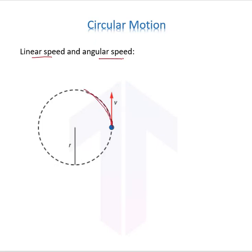So this V is the linear speed. Linear speed is the linear displacement upon time, so we can say the length of arc covered in a time t.